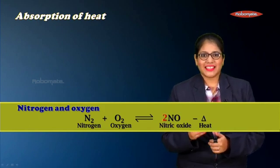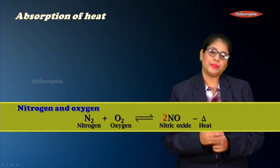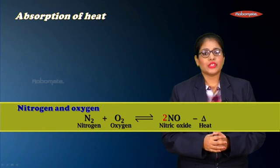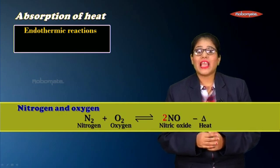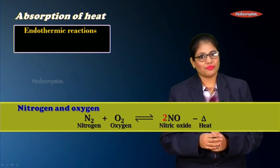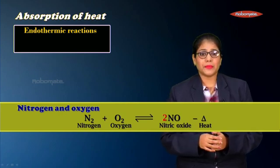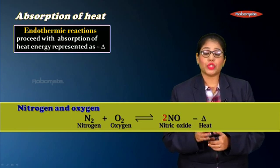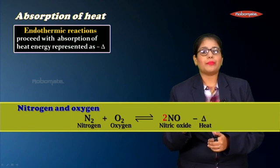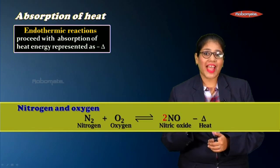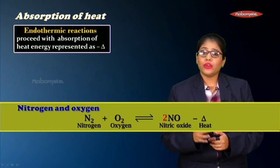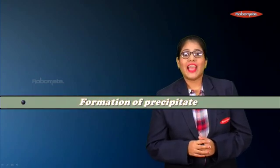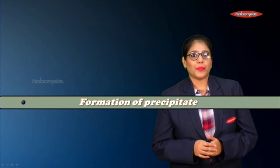Such reactions where heat energy is absorbed are called endothermic reactions. Endothermic reactions are defined as reactions which proceed with absorption of heat energy, represented as −Δ. The fourth type of change that takes place in a chemical reaction is formation of a precipitate.